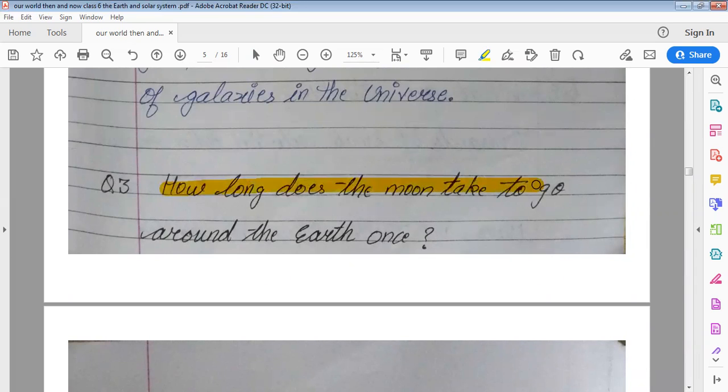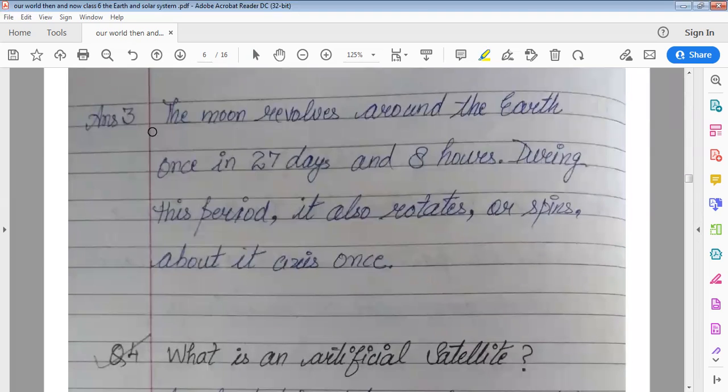How long does the moon take to go around the earth once? The moon revolves around the earth once in 27 days and 8 hours. During this period it also rotates or spins about its axis once.